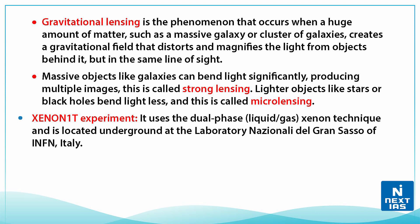Massive objects like galaxies can bend light significantly, producing multiple images — this is called strong lensing. Lighter objects like stars or black holes bend light less, and this is called micro lensing.